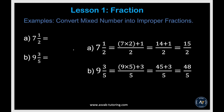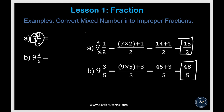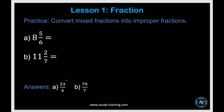Next, we'll learn how to convert a mixed number into an improper fraction. A mixed fraction has a whole number and a proper fraction. To convert, you multiply and add: for 7 and 1 half, 7 times 2 is 14, plus 1 is 15 over 2. For 9 and 3 fifths, 9 times 5 is 45, plus 3 is 48 over 5. Now try the practice examples by yourself and make sure you get the same answers.